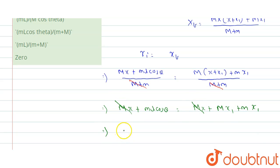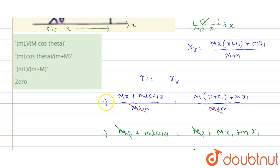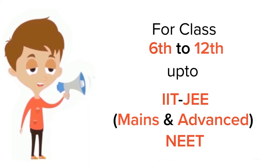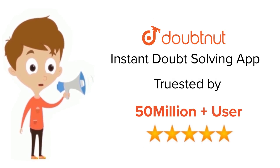The MX terms cancel out, and taking X1 common we get capital M plus small m. That implies the horizontal distance the wedge moves, that is X1, equals mL cos θ divided by capital M plus small m. That is option 2, the correct answer. Thank you. For class 6 to 12, IIT JEE and NEET level — trusted by more than 5 crore students — download Doubtnut app today.